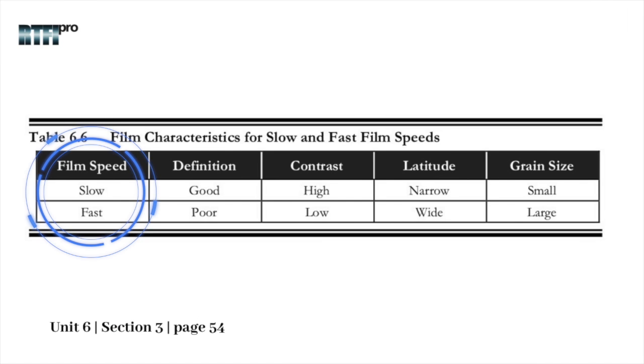To provide a better understanding, we need to know some important properties of radiographic film. We have two types of film: a slow film and a fast film. To break it down, we need to understand its definition, its contrast, its latitude, and grain size.